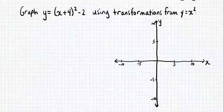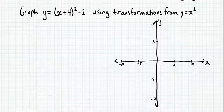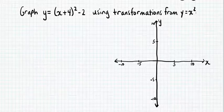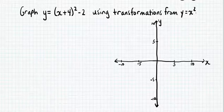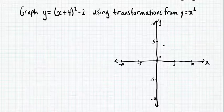Let's get into some examples. Here we want to graph y equals x plus 4 all squared minus 2 using transformations from y equals x squared. The first thing we're going to do is draw our base graph, y equals x squared. You can set up a table of values, substituting different x values to get the corresponding y coordinates. The five key points we generally use are: (0, 0), (1, 1), (2, 4), (−1, 1), and (−2, 4).